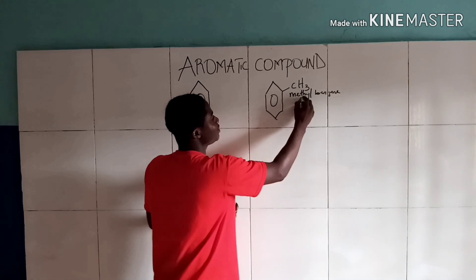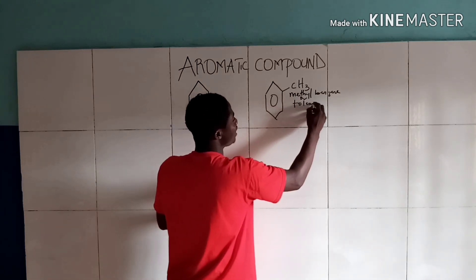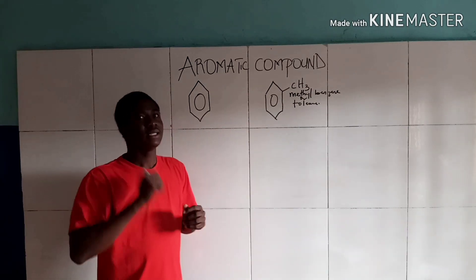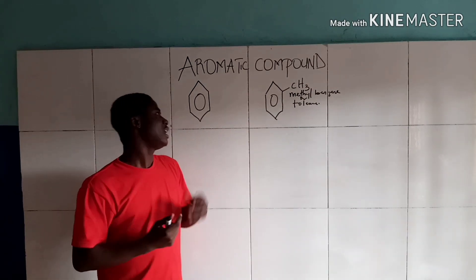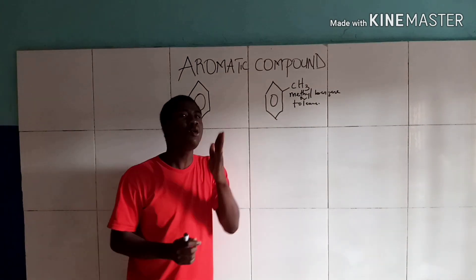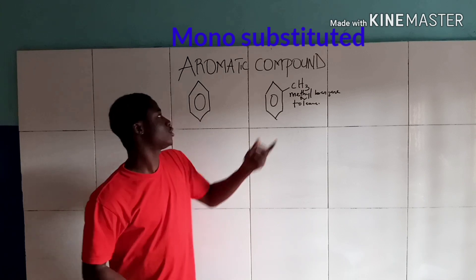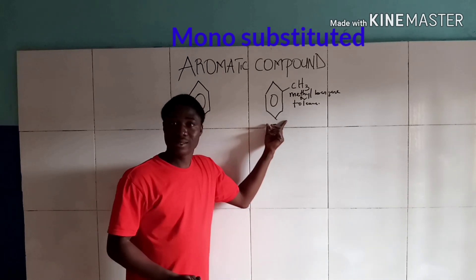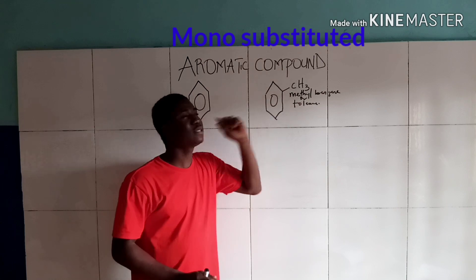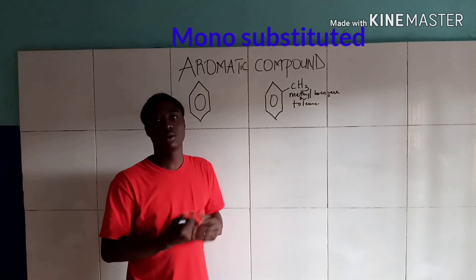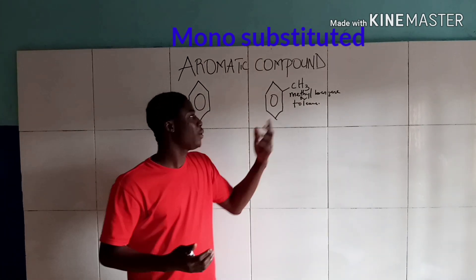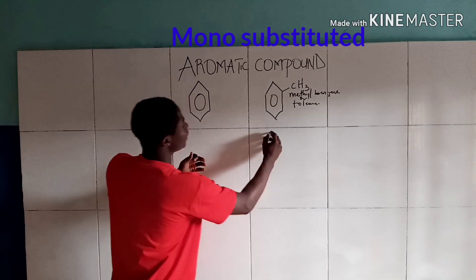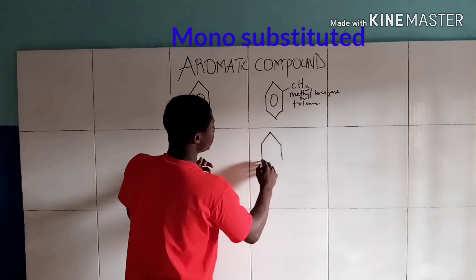Methylbenzene is also called toluene. This is a benzene derivative and you can see it is monosubstituted, because one hydrogen in the benzene structure is replaced by just one functional group. We have other monosubstituted benzene derivatives.